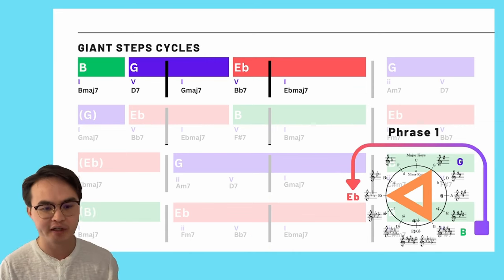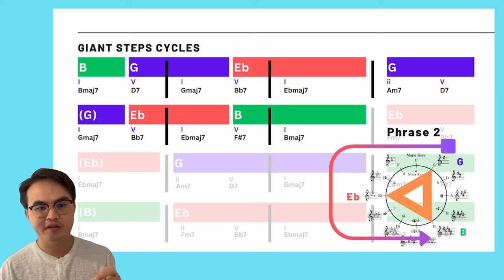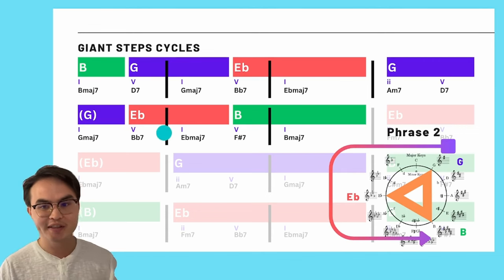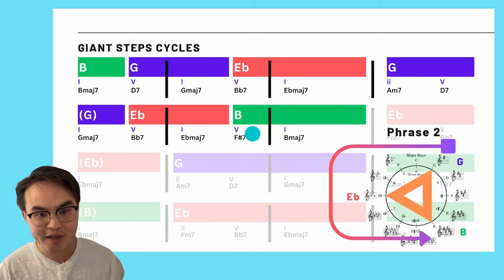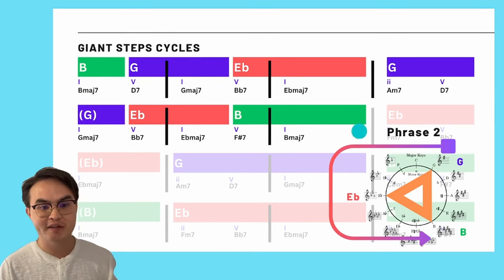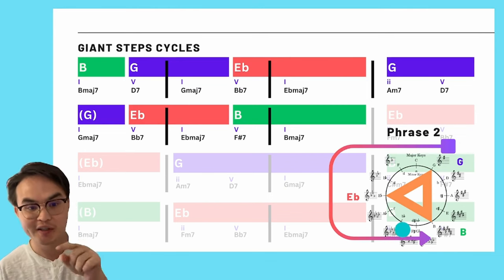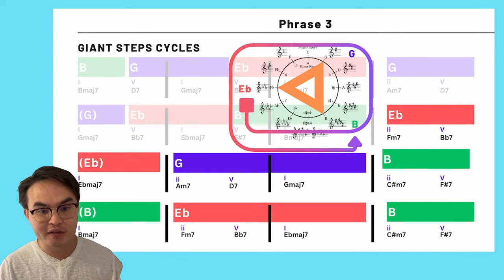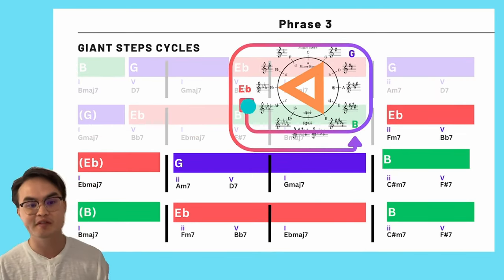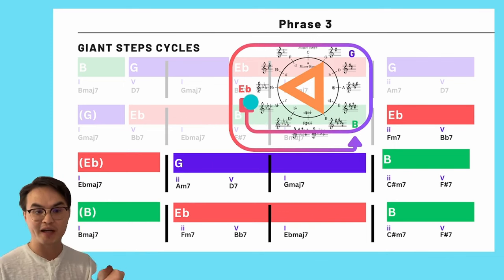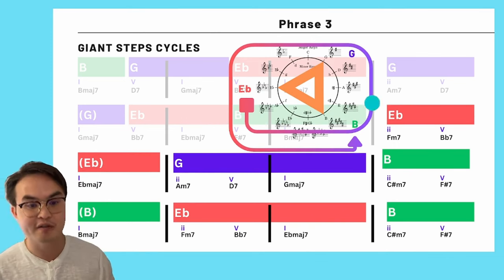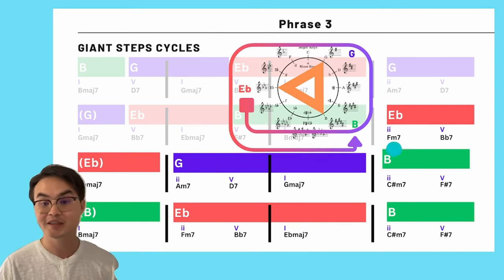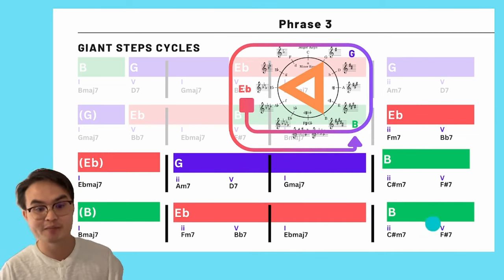Let's keep that in our brain and look at the second phrase. The second phrase, we are also rotating counterclockwise, going from G to E flat to B. But instead of starting on the key of B, we start on the key of G and go counterclockwise and kind of return to B. And then if we look at the third phrase, we are still rotating counterclockwise, but this time starting on the key of E flat. And we rotate counterclockwise, modulating from E flat to G to B to E flat, and then back to B.